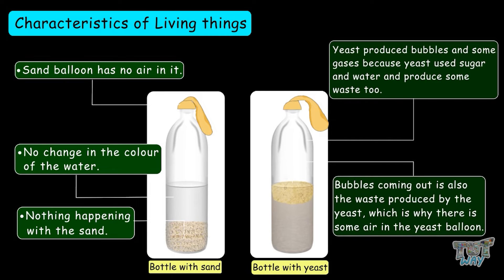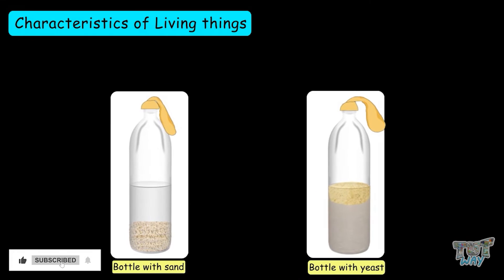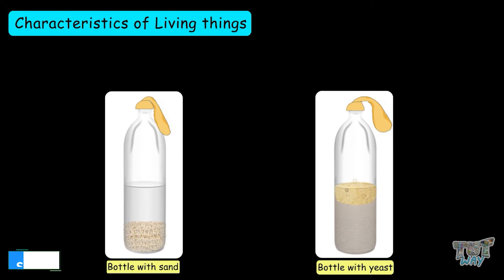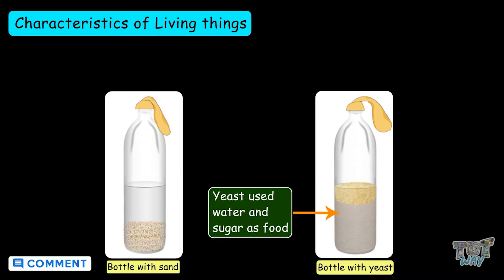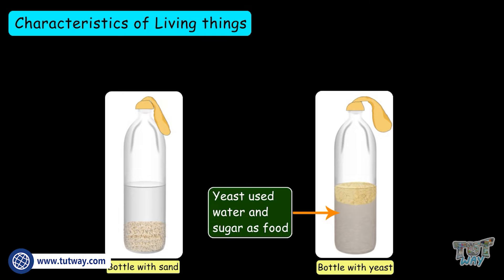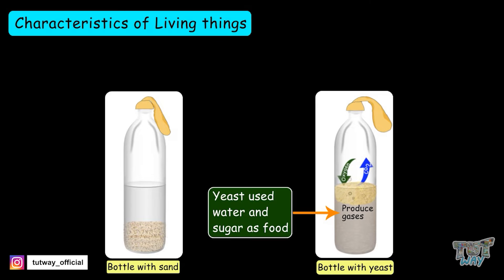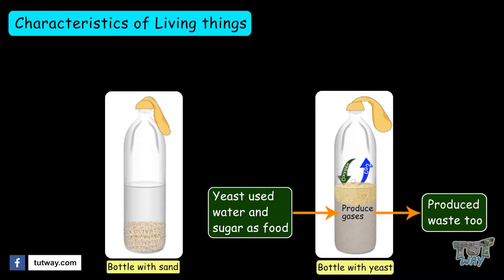The bubbles coming out are the waste produced by the yeast, which is why there is some air in the yeast balloon. It shows that as yeast is a living thing, it respires, exchanges gases, and also used the water and sugar as food and produced waste. We can conclude that all living things use some source of food or energy, and also release some gases and waste.